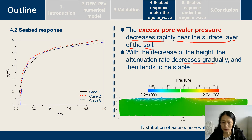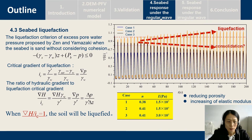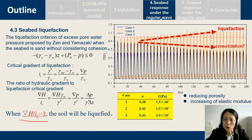Here is the contour of the pore pressure. We also give the effective stress of the seabed for the three cases. We can see that the effective stress of the seabed increases monotonically along the vertical direction. However, in the horizontal direction, the effective stress differs because of the different particle sizes. We can use this liquefaction parameter to assess the liquefaction state. From this figure, we can see that for case 2, the parameter is larger than 1, so the seabed is liquefied.